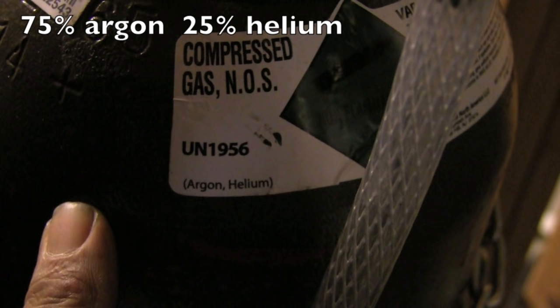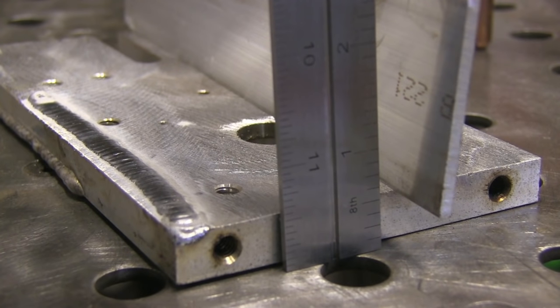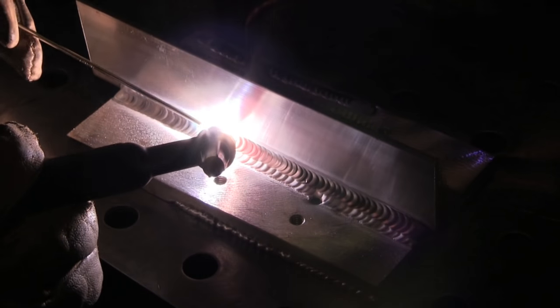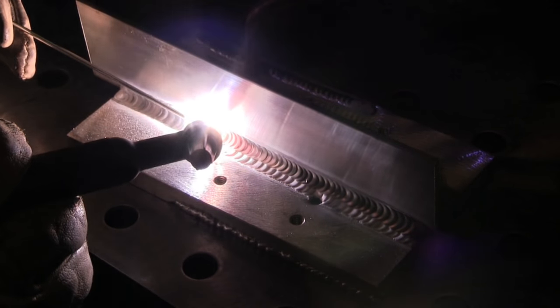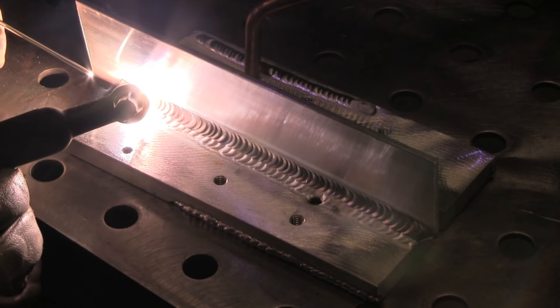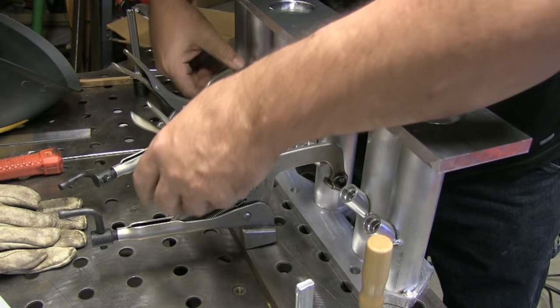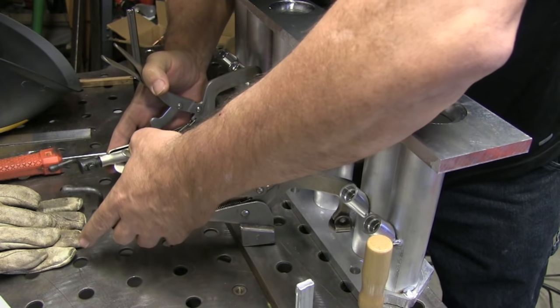I'm using 75% argon 25% helium mixed gas today and I'm going to do a little mock-up here before I really get into this thing using the same thicknesses, half inch base plate to an eighth of an inch top plate and just kind of tweak the settings and get used to welding aluminum again.